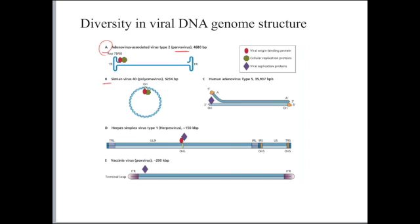In B, we have SV40, which is one of our most understood viruses of all times. And you can see it's actually a circular genome, whereas human adenovirus has a linear genome. Both of these are double-stranded.